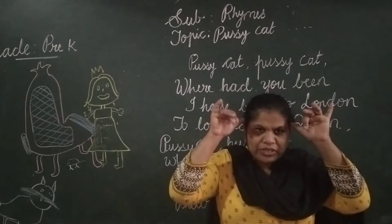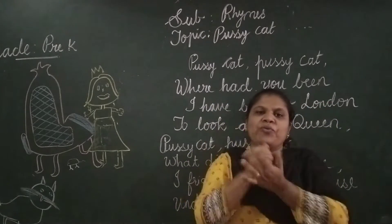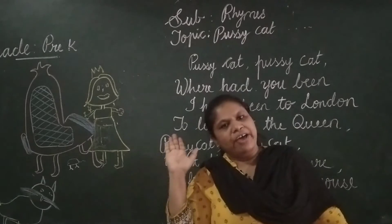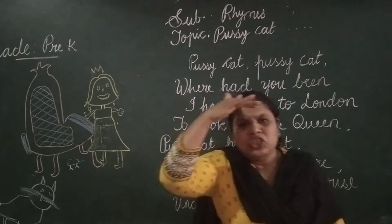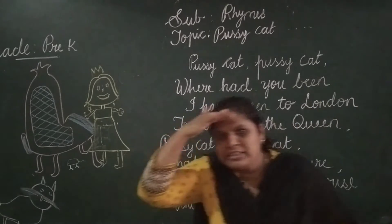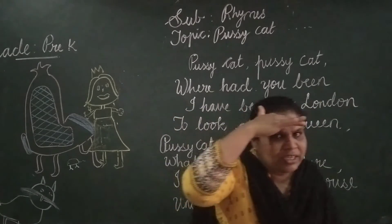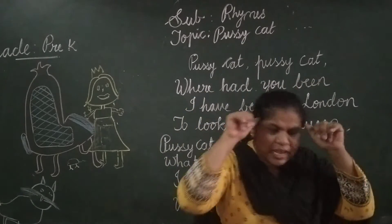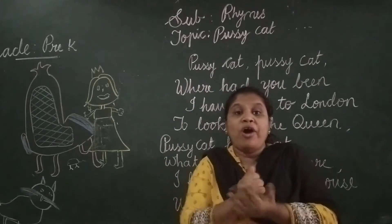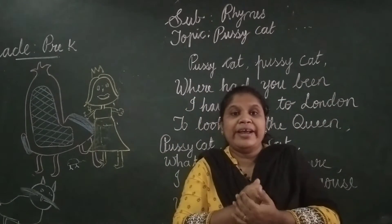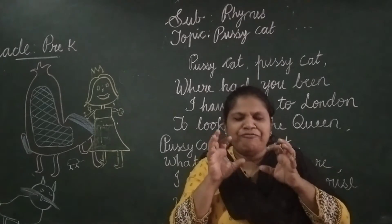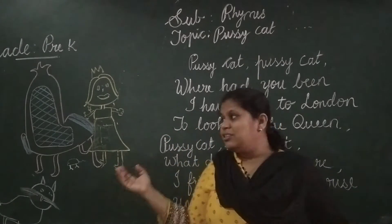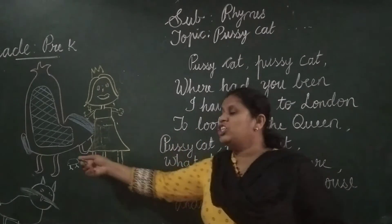Pussycat, pussycat, where have you been? I have been to London to look at the queen. Pussycat, pussycat, what did you do there? I frightened the little mouse under her chair.